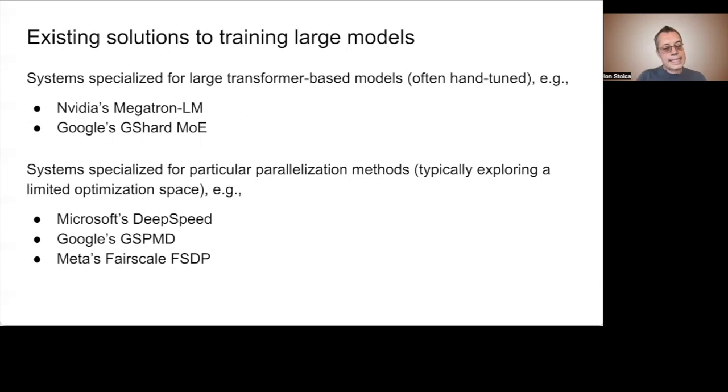In the second category, we have systems that support a larger variety of network architectures, but employ only a subset of parallelization methods. In doing so, these systems effectively trade the quality of optimization for the time it takes to compute this optimization.